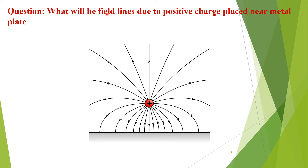What will be the field lines due to a positive charge placed near a metal plate? A positive charge placed near a metal plate will attract negative charges in the plate, which move to the surface. Since electric field lines initiate from the positive charge and terminate at the negative charge, the field lines from the positive charge will terminate at the negative charges on the metal plate surface, and these field lines will be perpendicular to the metal plate surface.